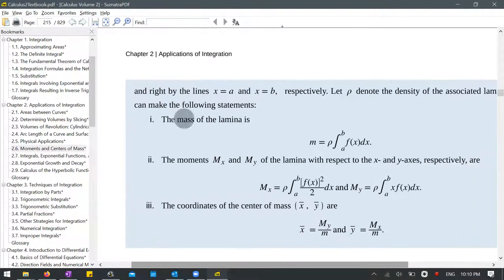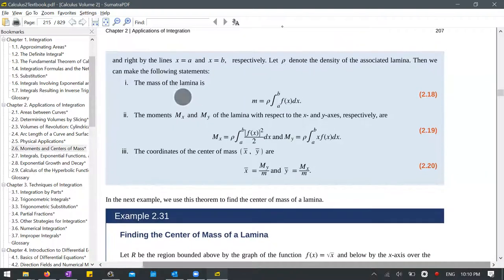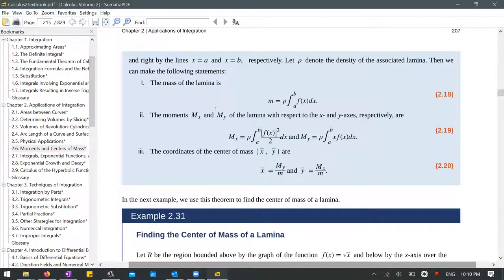Now, this rho denoting the density of the associated lamina, what actually ends up happening is the rhos are going to cancel out here. When you do the division, the rhos will cancel out, so they don't matter. Or you could just say that they're 1, that works also.